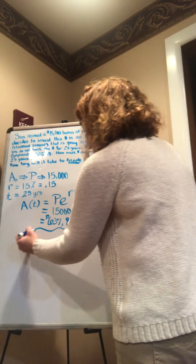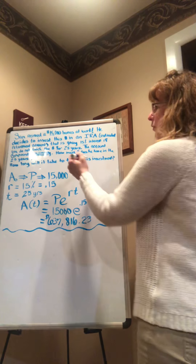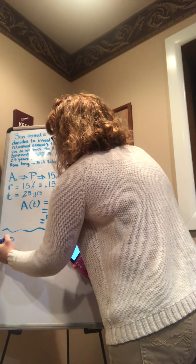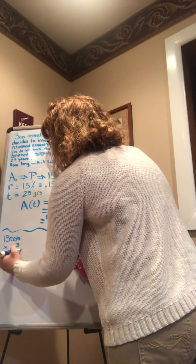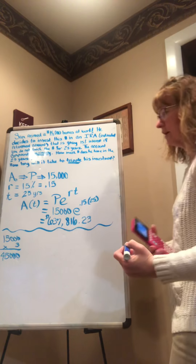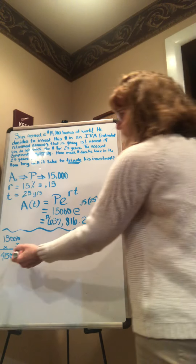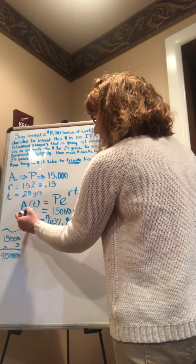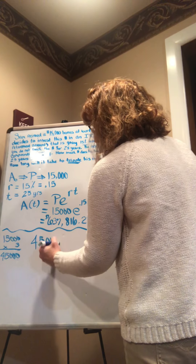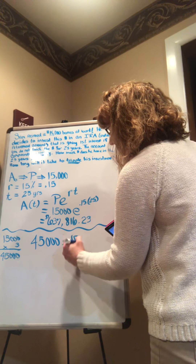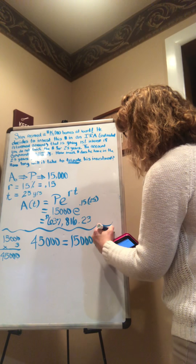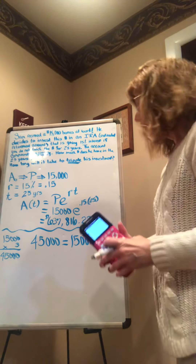So now if I want to know how much he has in the account, the amount over time is equal to the principal times E to the RT power — we call that PERT. So this one's a straight multiplication. Put in the 15,000 for the principal, put in Euler's number, the rate 15%, and the time is 25 years.